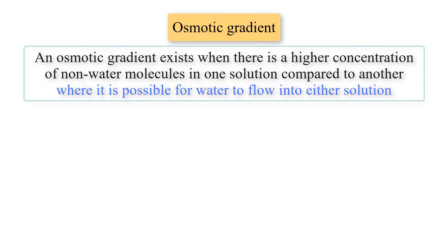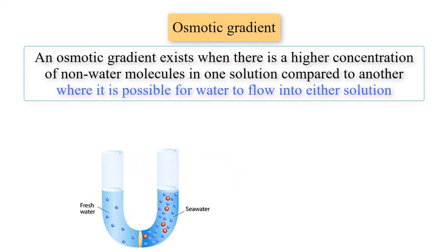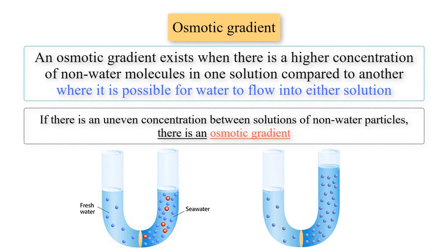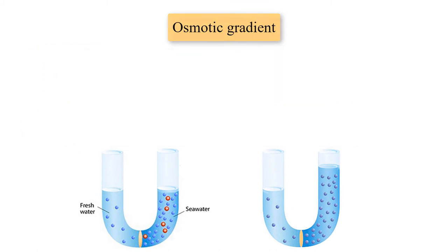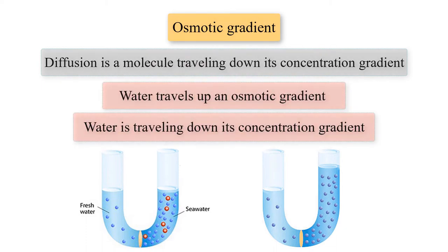An osmotic gradient exists when there is a higher concentration of non-water molecules in one solution compared to another where it is possible for water to flow into either solution. Put another way, if there is an uneven concentration of non-water particles between solutions, there is an osmotic gradient. What is notable is that diffusion is often described as a molecule traveling down its concentration gradient — but in the case of water, an osmotic gradient is measured by the concentration of what is not water. Therefore, water travels up an osmotic gradient, which also means water is traveling down the water concentration gradient.